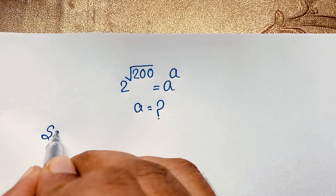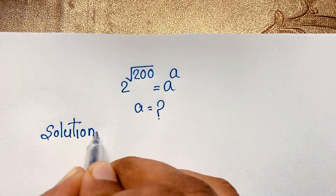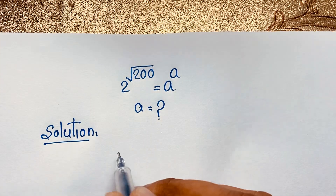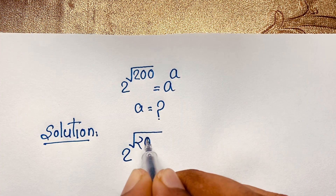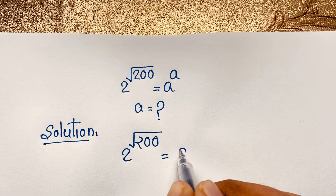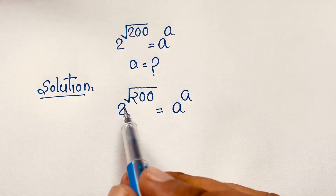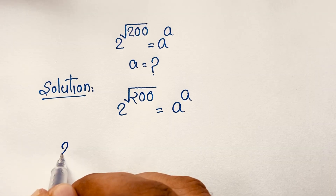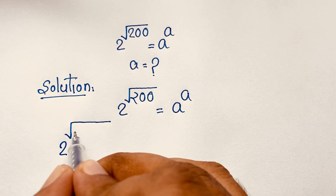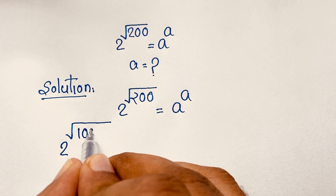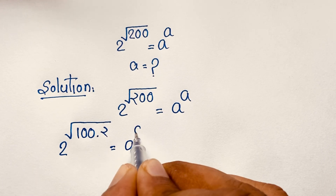I solved this question with an easy method and math solution. Our question is 2 to the power √200 is equal to a to the power a. Now, I will evaluate the 200 — it will be 100 times 2 — so 2 to the power √(100×2) is equal to a to the power a.